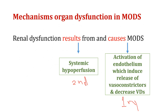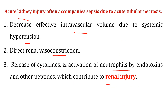Regarding renal dysfunction, it can cause primary MODS, or as in the case of activation of endothelium with reduction of vasoconstrictors and vasodilators, it can result from systemic hypoperfusion leading to secondary MODS. In acute kidney injury, there is a decrease in intravascular volume due to systemic hypotension. Direct renal vasoconstriction leads to release of cytokines and activation of neutrophils by endotoxins and other peptides, contributing to the development of acute renal injury.